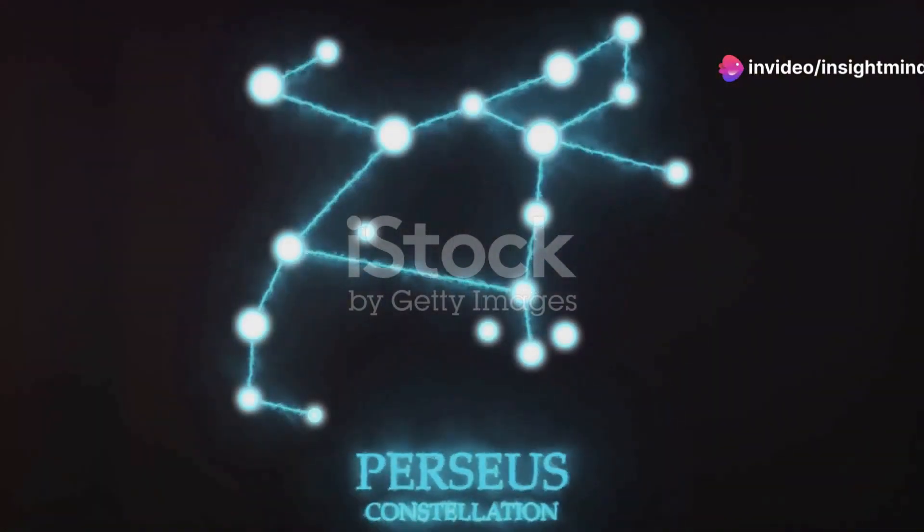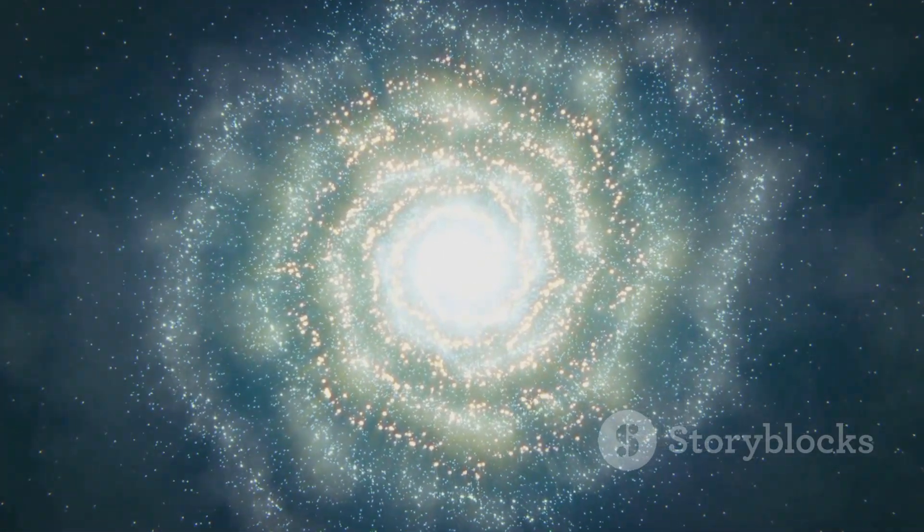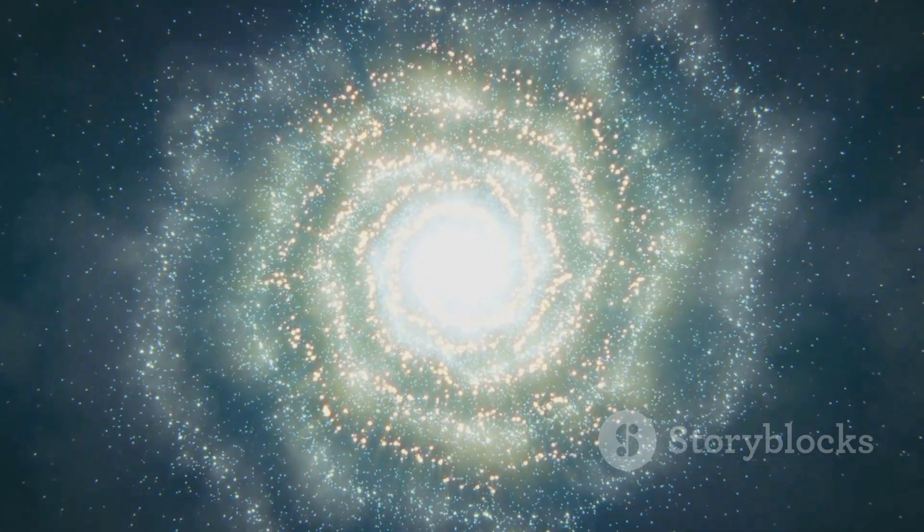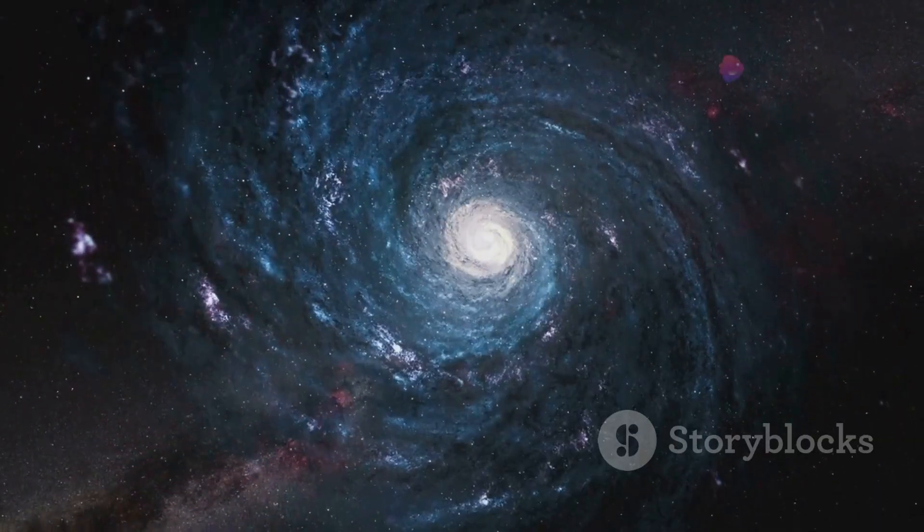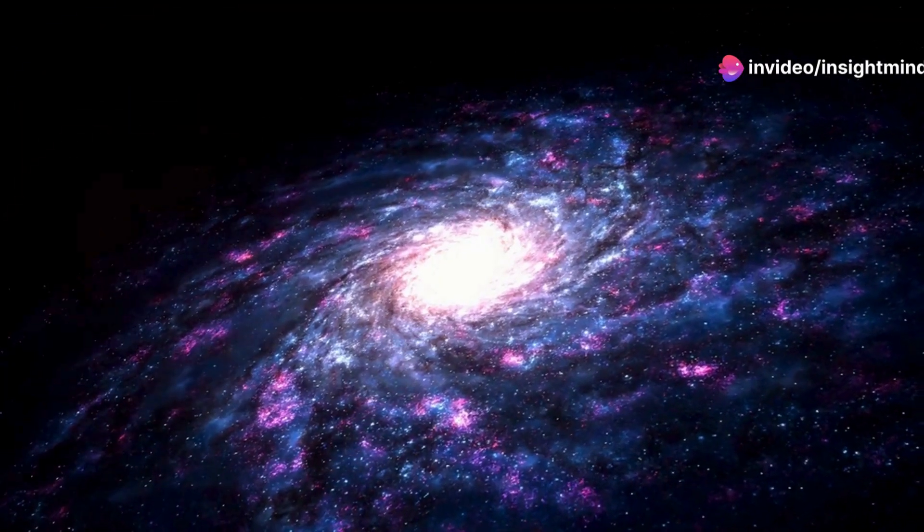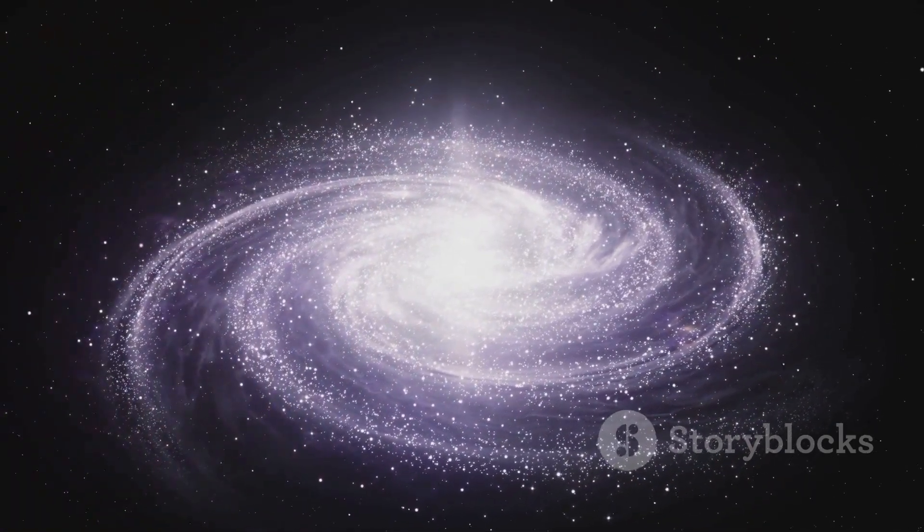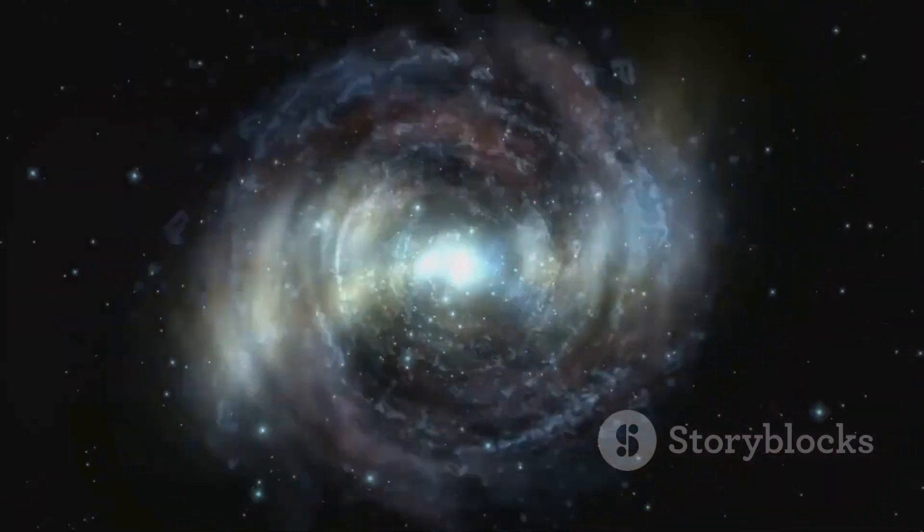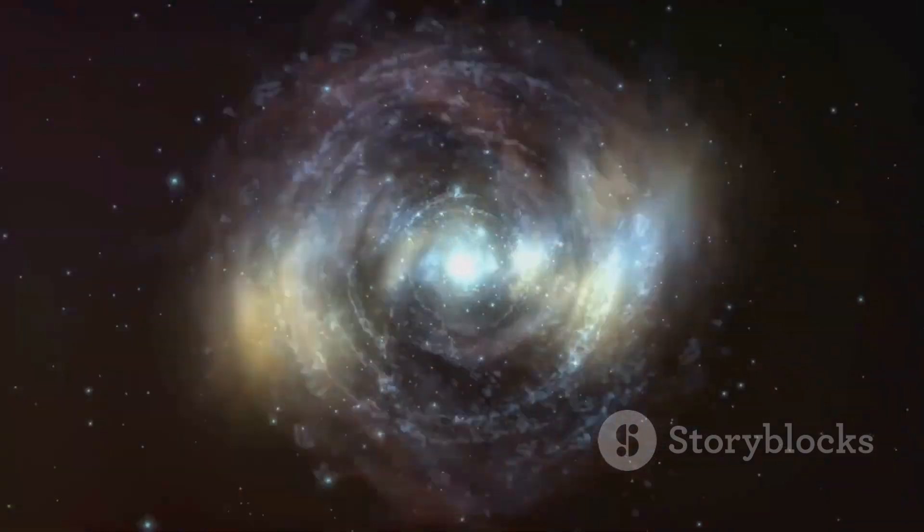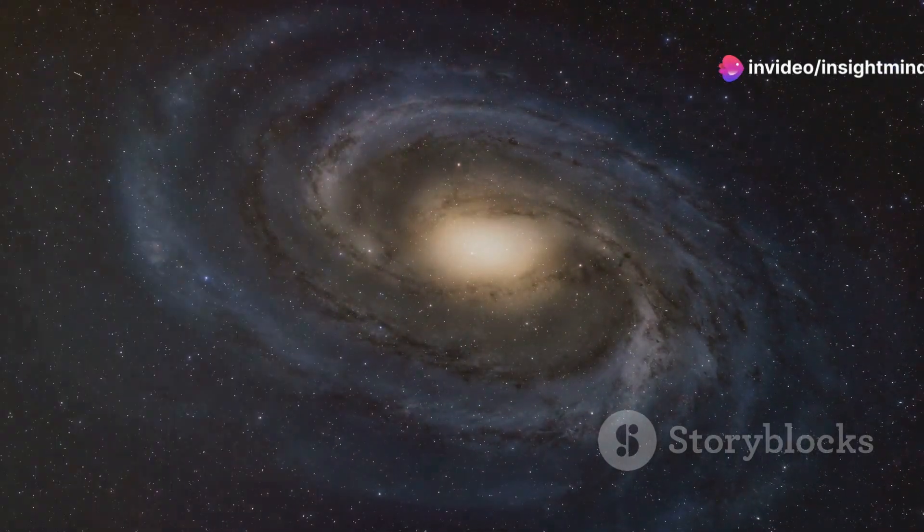Our cosmic exploration takes us to the constellation of Perseus, where we encounter UGC 2885, a galaxy of truly gargantuan proportions. UGC 2885 is a barred spiral galaxy, its spiral arms adorned with vast star-forming regions, a testament to its ongoing growth and evolution. This cosmic leviathan spans over 832,000 light years across, making it one of the largest known spiral galaxies in the universe.